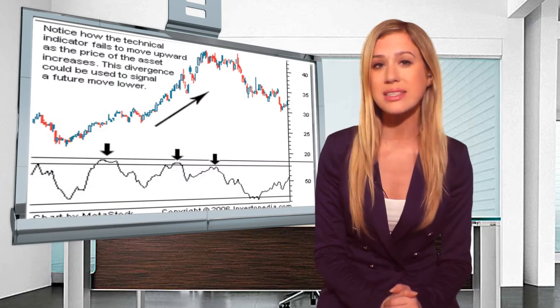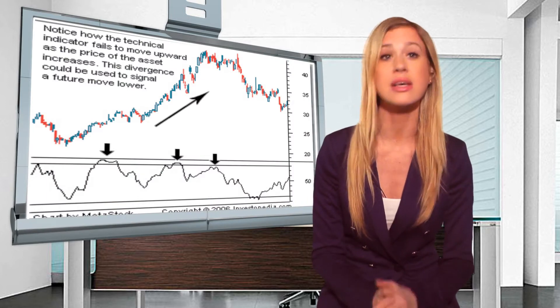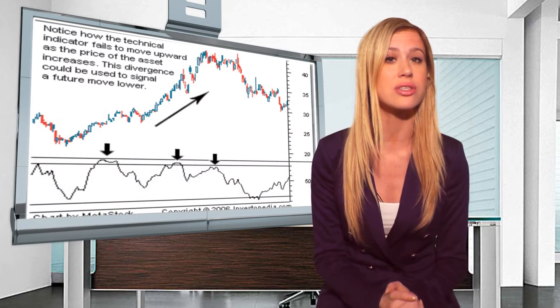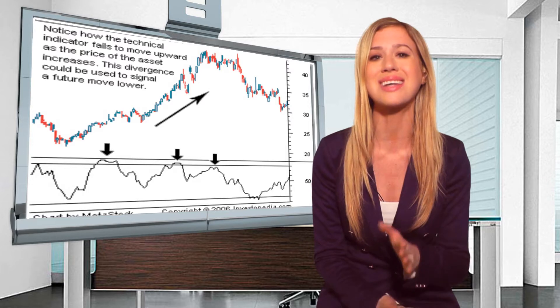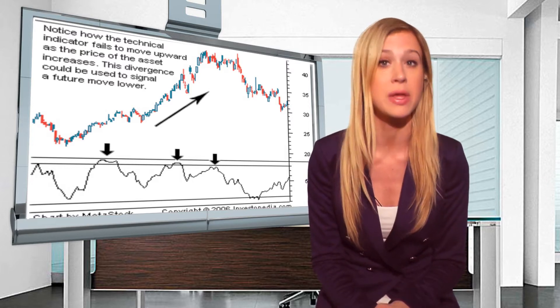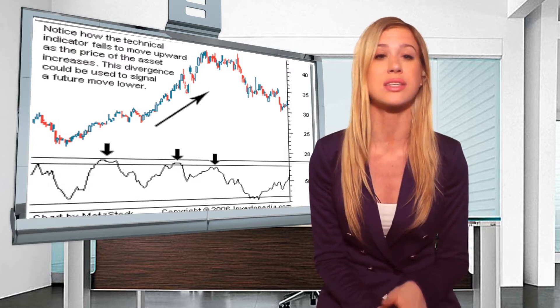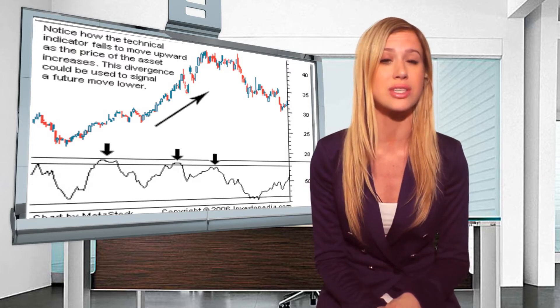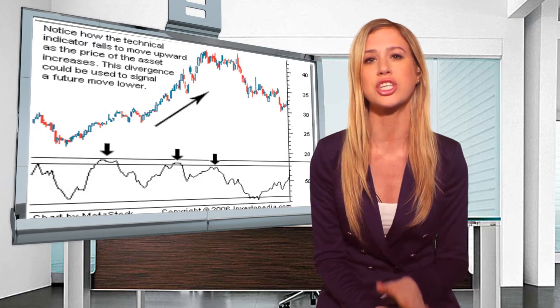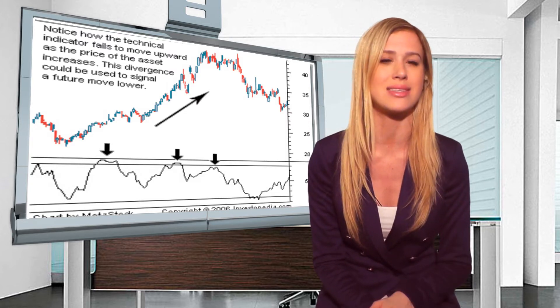Welcome to Investors Trading Academy's Term of the Day. Today we're going to talk about price divergence. Price divergence is a situation in which indications of a trend will diverge from the price action. When traders in the market recognize a price divergence, they often change their position against the price action.